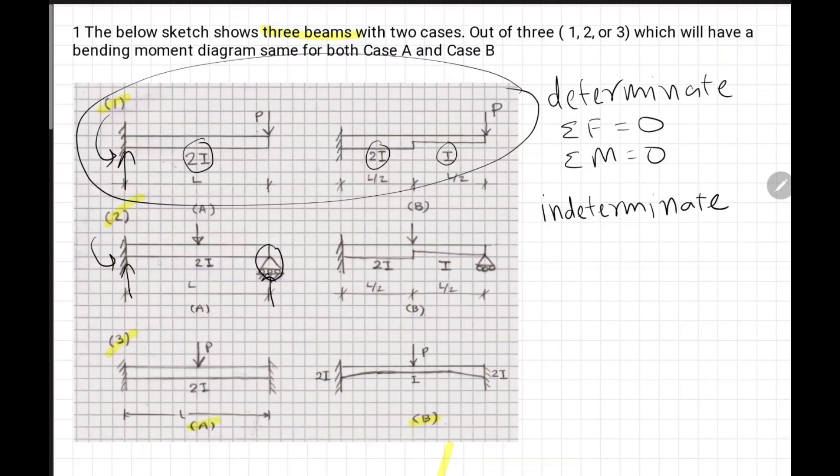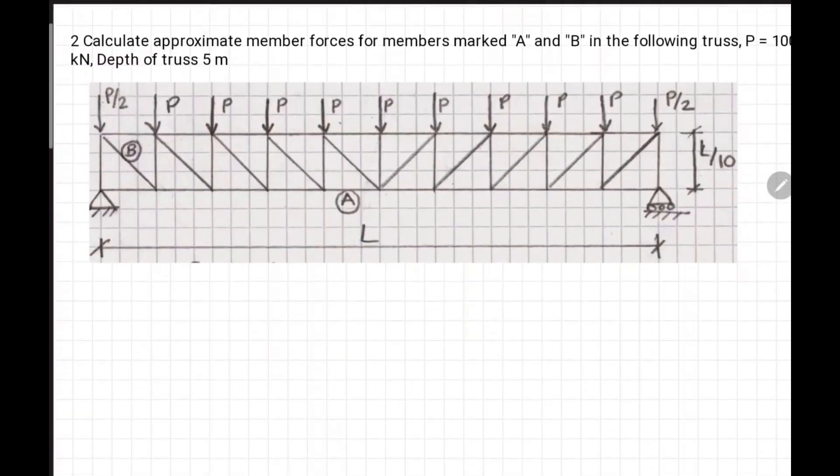In case of indeterminate structures, which are problems two and three, beam stiffness will determine the reaction carried by the beam. Let's jump to second question. The second question was about finding forces in truss members marked A and B. The load was given, P equals 100 kN. Depth of truss is given, which is L over 10, 5 meters.